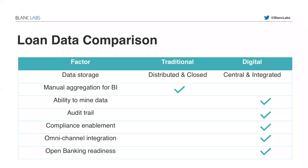To do a quick comparison of the traditional and digital aspects: from a data storage perspective, in the traditional way we have a distributed and closed system, while in the digital world it is central and integrated with other platforms and partners. Manual aggregation for business intelligence is an issue with the traditional loan cycle, whereas in the digital side we have an ability to mine data, a full audit trail for compliance enablement, integration for omnichannel presence, a unique and uniform user experience, and readiness for open banking. Digital has a lot of advantages over the traditional loan cycle.